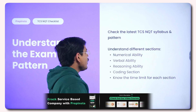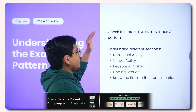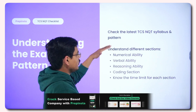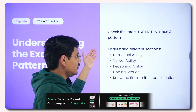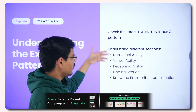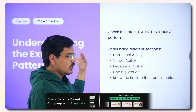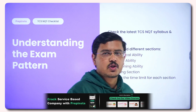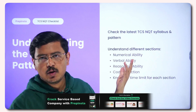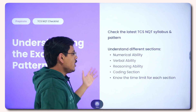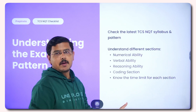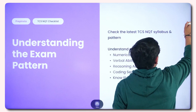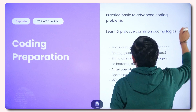First of all, check the latest TCS NQT syllabus and pattern: numerical ability, verbal ability, reasoning ability, and coding section. We have made videos for these on YouTube — go ahead and check them out. Also, know the time limit for each section. That is super important — the time limit should be known to you.